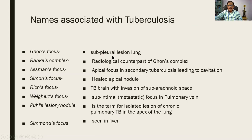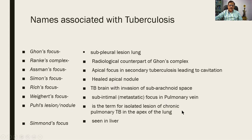Summary of named foci: Ghon's focus is in the lung; Ranke complex is the radiological counterpart of Ghon's complex; Assmann's focus is secondary tuberculosis with cavitation; Simon's focus is a healed apical lesion; Rich focus is found in the brain; Weigert's focus is a sub-intimal metastatic focus in the pulmonary vein from vascular invasion; Puhl's focus is seen in chronic pulmonary tuberculosis at the apex; Simmonds' focus (S-I-M-M-O-N-D-S) is seen in the liver — differentiate from Simon's (S-I-M-O-N) in the lung.